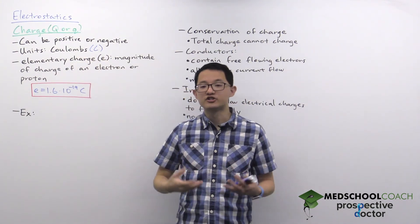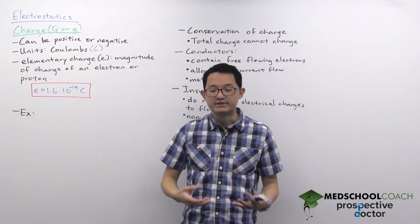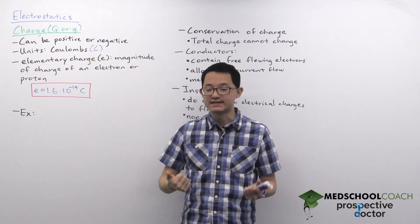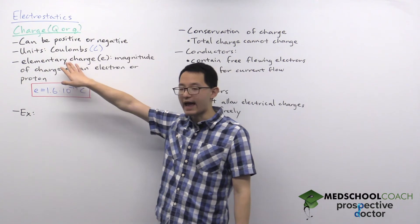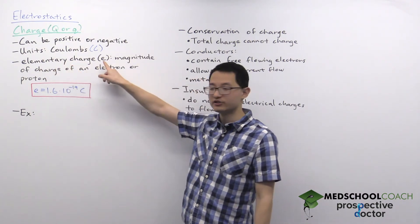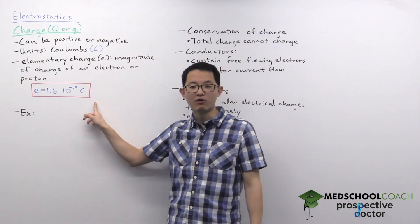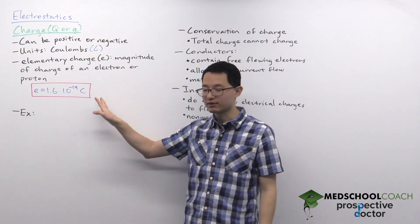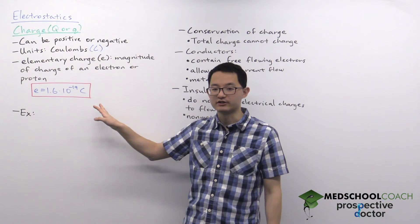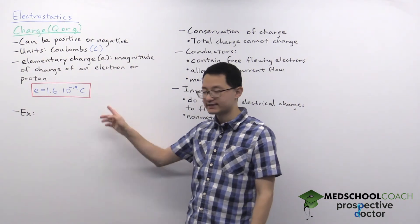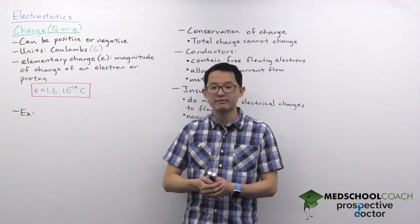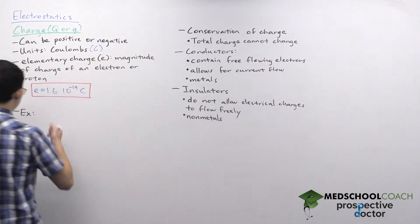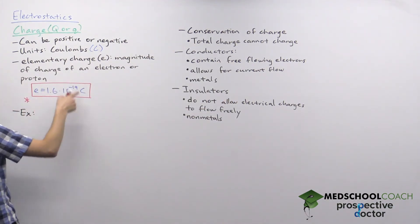In terms of where charge comes from, they come from atoms, and within atoms there are electrons and protons. Electrons and protons have the same magnitude of charge, which we call the elementary charge. The elementary charge is denoted by lowercase e and it's equal to 1.6 times 10 to the negative 19 coulombs. So that means a proton has a charge of plus e and an electron has a charge of minus e. And since when you're transferring charge you can only transfer them in increments of electrons or protons, we can see that charge is quantized — always transferred in increments of e.